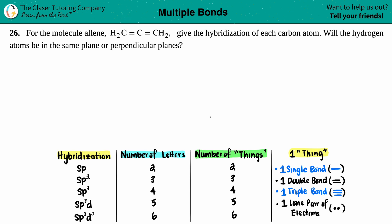Number 26. For the molecule allene, which is H2C=C=CH2, give the hybridization of each carbon atom. Will the hydrogen atoms be in the same plane or perpendicular planes? Okay, so let's just answer the first question first. We basically have to give the hybridization of each carbon atom. Now, in order to do this, we do have to have a Lewis structure.